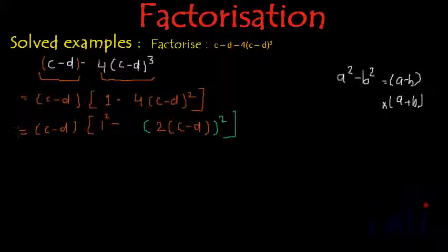So now we can use this formula. If we use that formula, we will get (c-d) as it is, and one factor will be 1 - 2(c-d).